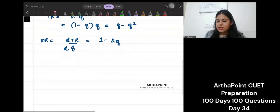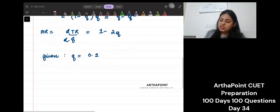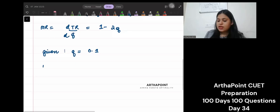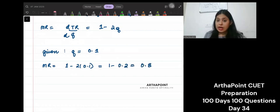But it is given to me that q is 0.1. So if I just plug in that value, what will I get? 1 minus 2 into 0.1. 1 minus 0.2. So it will be 0.8.